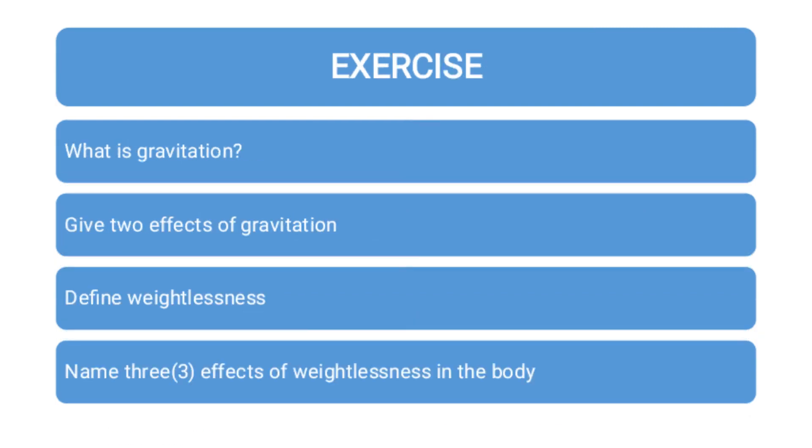Now we have come to the end of this class, but before we go, let's take the exercise. Number one, what is gravitation? Secondly, give two effects of gravitation. Number three, define weightlessness. And then finally, name three effects of weightlessness in the body. Thank you very much for joining us. For your questions and comments, kindly send an email and we'll respond promptly. See you next class.